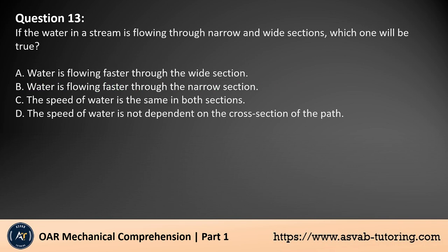Question 13. If the water in a stream is flowing through narrow and wide sections, which one will be true? A. Water is flowing faster through the wide section. B. Water is flowing faster through the narrow section. C. The speed of water is the same in both sections. D. The speed of water is not dependent on the cross-section of the path.